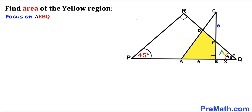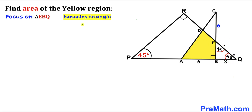Let's focus on the tiny right triangle EBQ. This triangle has a 90-degree angle and a 45-degree angle, so the third angle must also be 45 degrees. Since both base angles are 45 degrees, this is an isosceles triangle, meaning side EB equals side BQ. Since BQ is 3 centimeters, EB is also 3 centimeters.